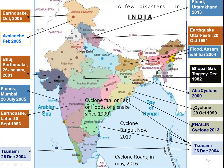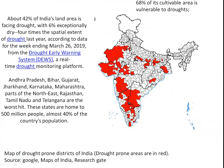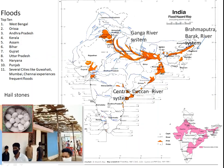Cyclone Rono struck in 2016. These are the drought-prone areas marked in red where rainfall is very scarce, causing major problems for farmers. States like Andhra Pradesh, Gujarat, and Jharkhand are affected — 42% of land areas face drought and 6% face chronic dry conditions, meaning farmers here are under serious stress.